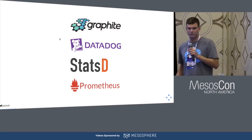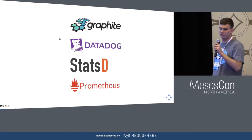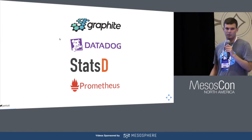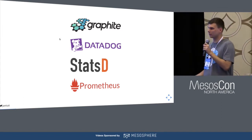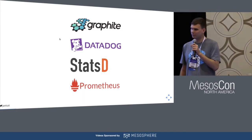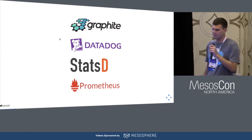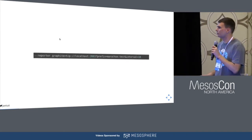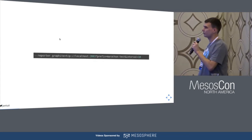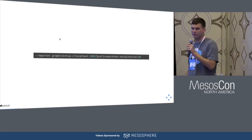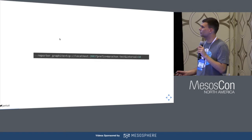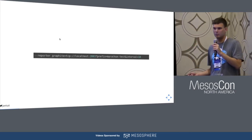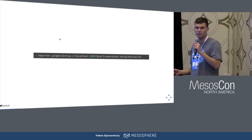Marathon supports all metrics data stores like Graphite, which we are using, Datadog, and StatsD. There is also support for Prometheus, but to use it you need a custom adapter available on GitHub, because Marathon presents metrics on a metrics endpoint in JSON format and Prometheus requires a flat format like CSV. To enable metrics, you put the configuration option with the reporter — in this example it's Graphite — along with the protocol (TCP or UDP), where to put the metrics, an optional prefix, and an interval which defaults to 10 seconds.